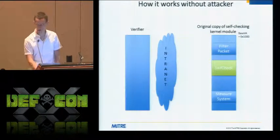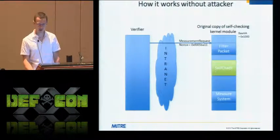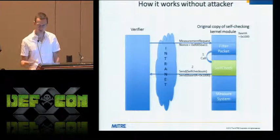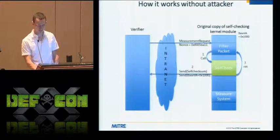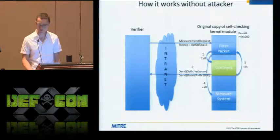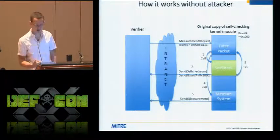In the normal self-checksum flow: the measurement request comes into the client including the nonce, the main switch case receives the packet and triggers the self-checksum, the result goes back to the server, and the server confirms the checksum is correct and the round-trip time was within expectations. Then the system also does a measurement of NTOS kernel, sends it back, and the server says: NTOS kernel looks good and I believe what you're telling me because your self-checksum was also good.